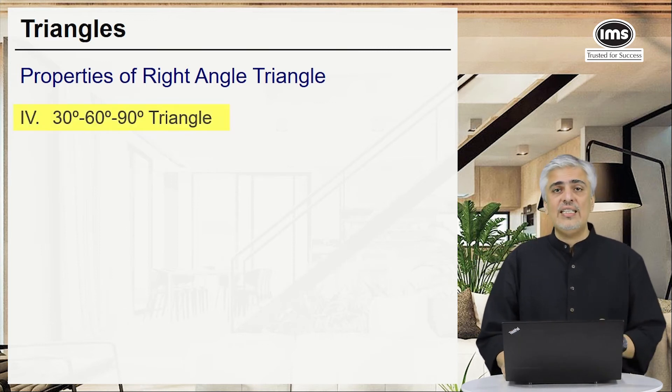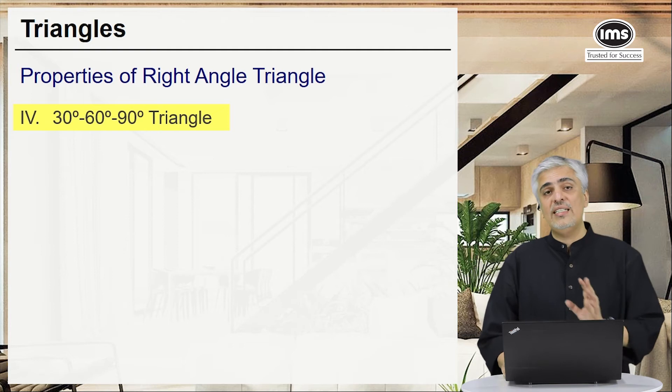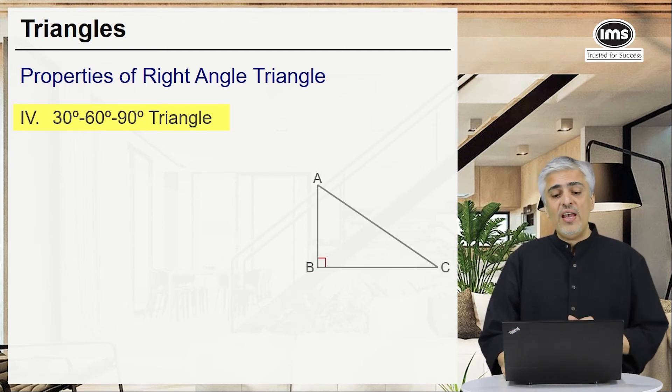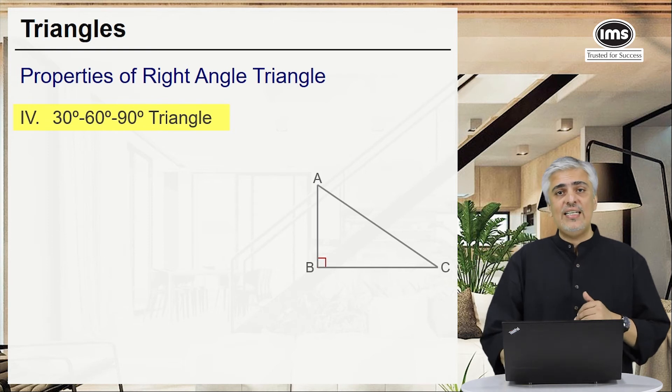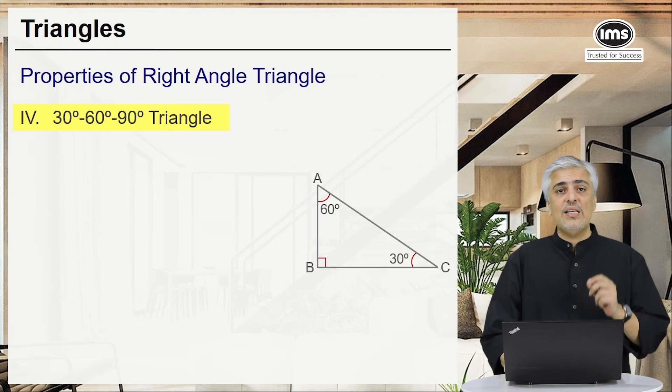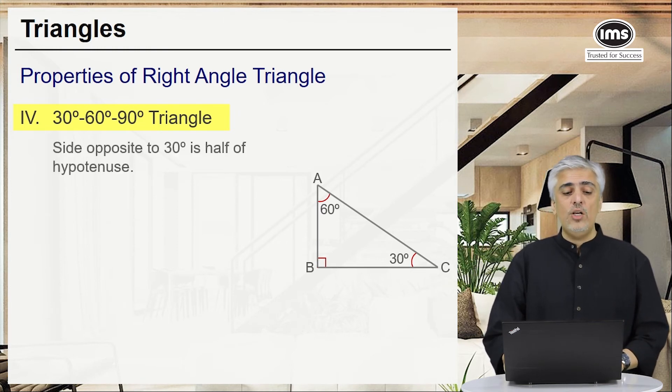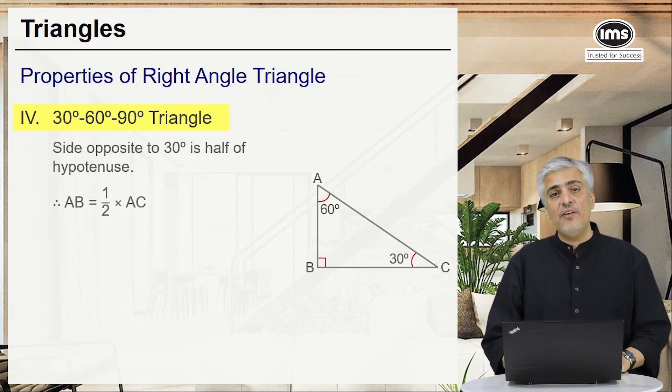Next one, 30-60-90 theorem or 30-60-90 triangle. Very important. So if I have a triangle where one angle is 90 and the other two angles are 30 and 60, then there are some special properties around this triangle. The first one being that the side opposite to 30 degrees is half of hypotenuse. So which is your side opposite to 30 degrees in this diagram? AB. So AB will be half of AC.